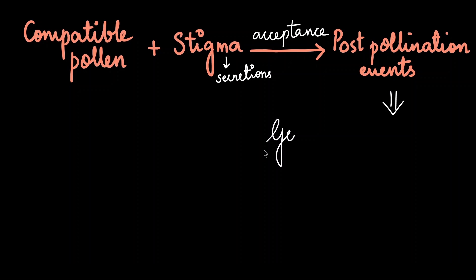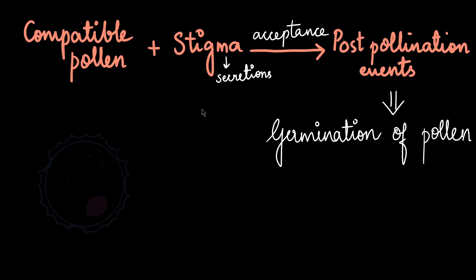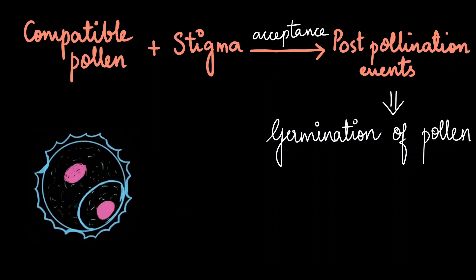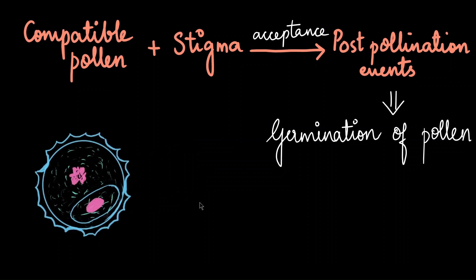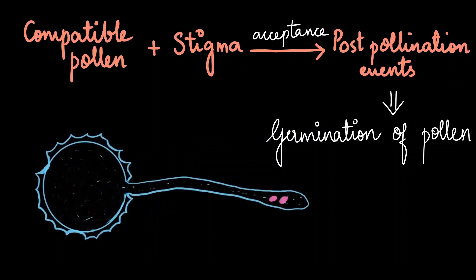The first post-pollination event is the germination of the pollen grain. The pollen grain has an outer protective layer, cytoplasm, and a single nucleus initially, along with structures called germ pores. The pollen then divides into two cells: a vegetative cell and a relatively smaller generative cell. The pollen undergoes more growth and the cytoplasm bursts out through the germ pore, forming the pollen tube.